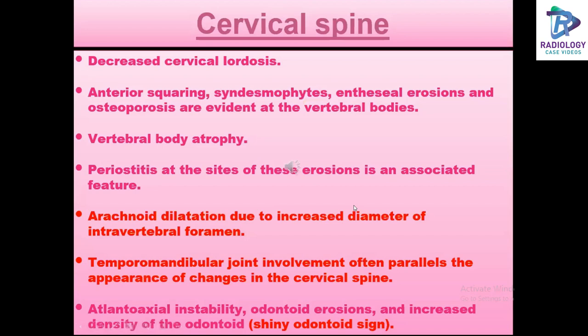In the cervical spine, a more specific finding is arachnoid dilatation due to the increased diameter of the intervertebral foramen. Temporomandibular joint involvement often parallels the changes in the cervical spine. The shiny odontoid sign is the increased density of the odontoid process seen in cervical spine imaging. We also see atlantoaxial instability and odontoid erosions in patients with AS.